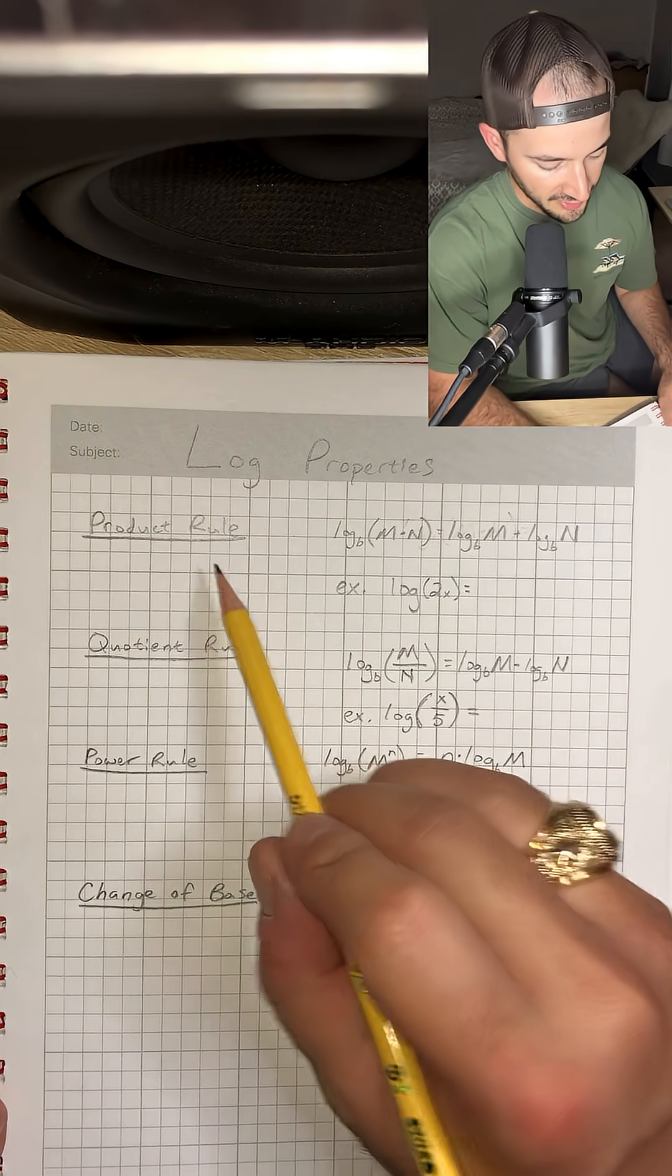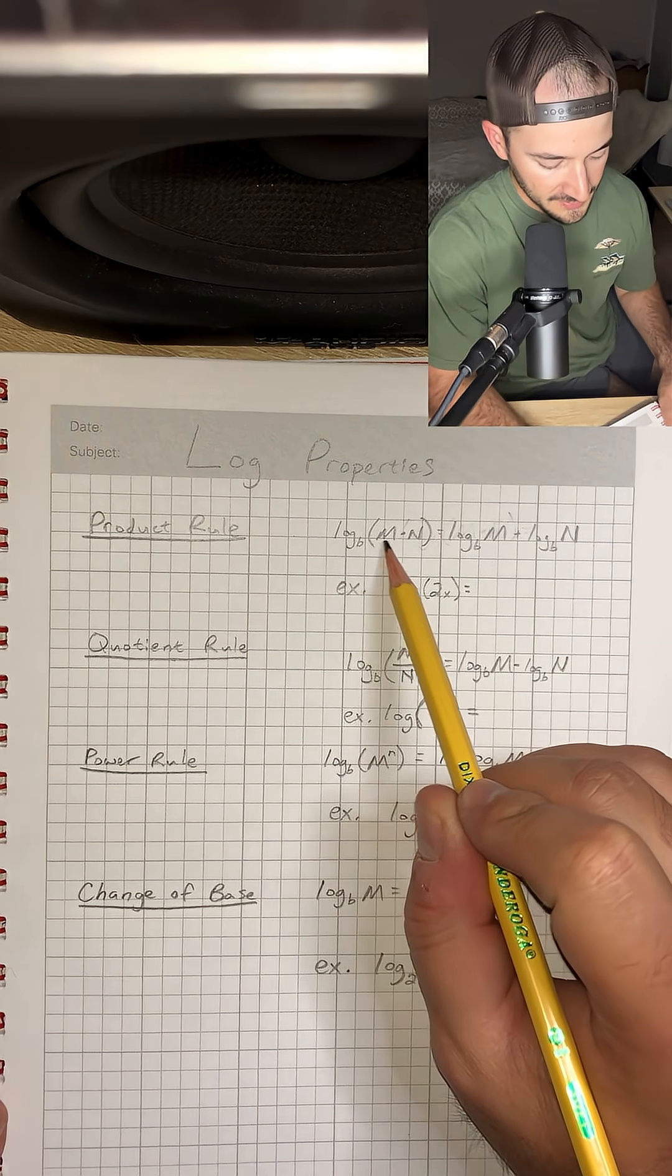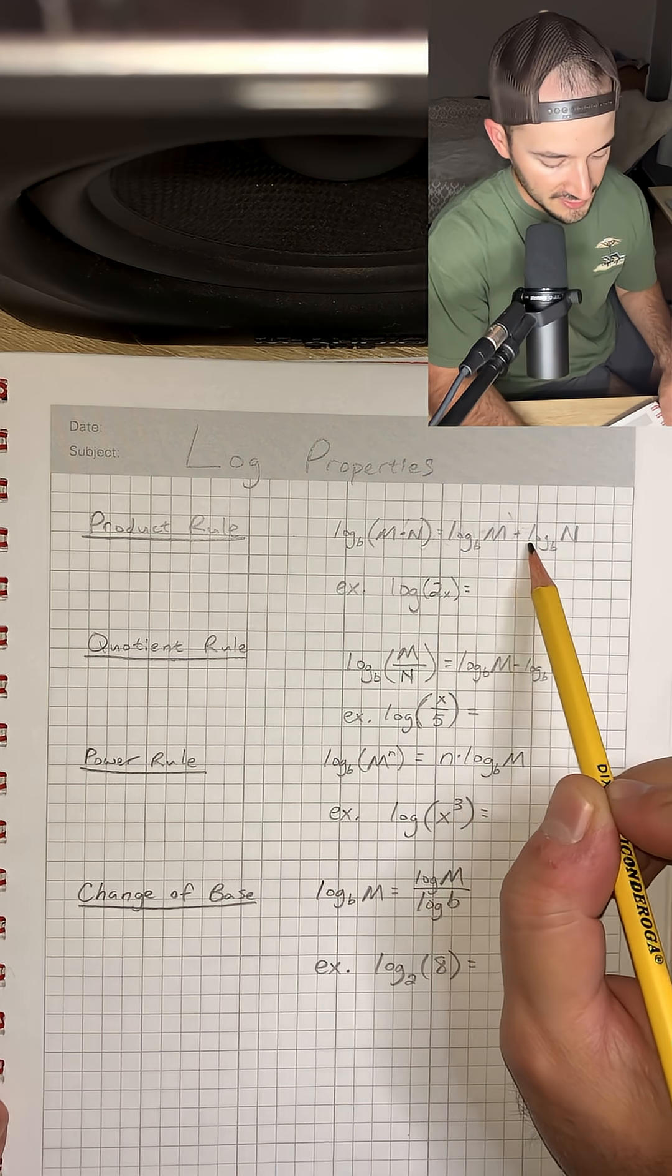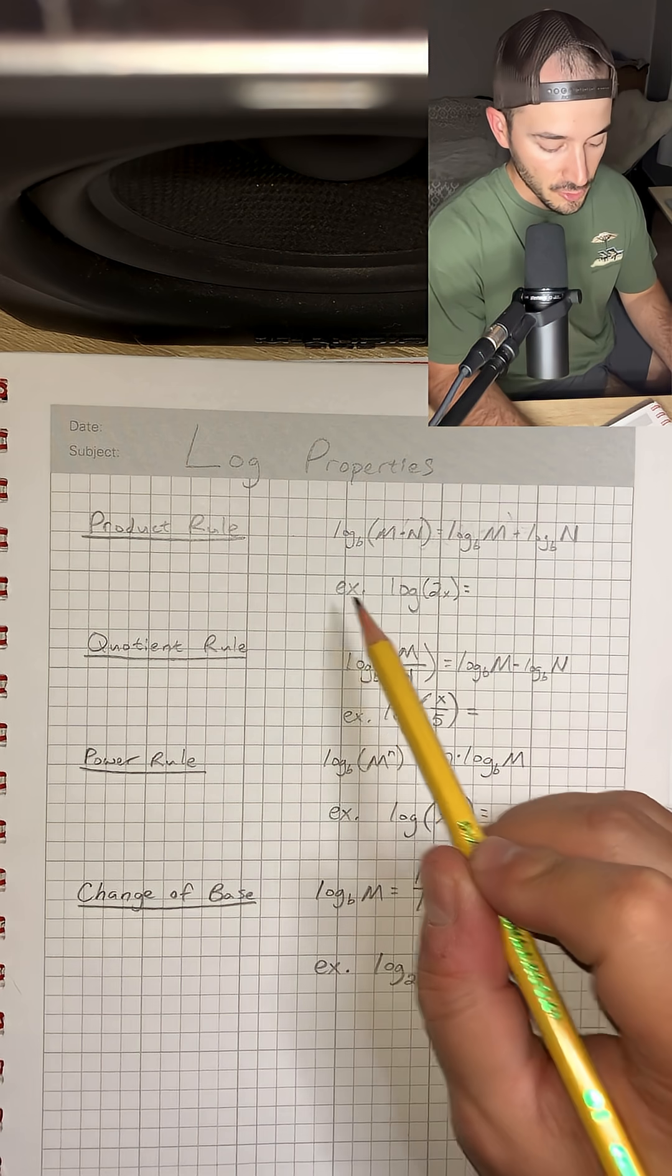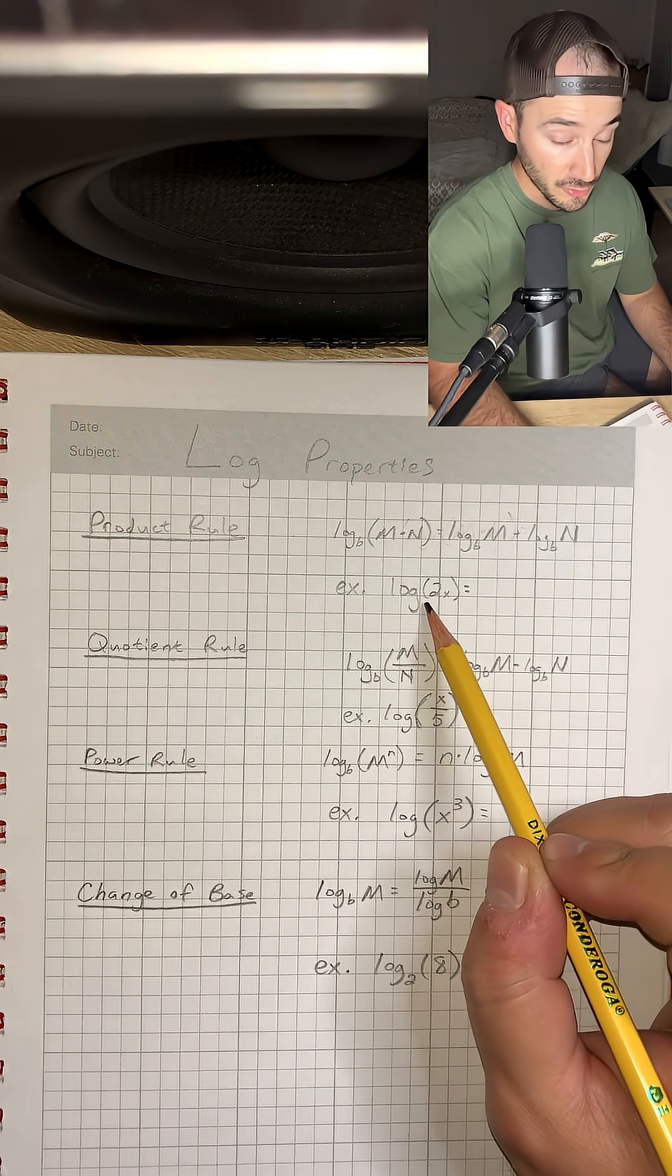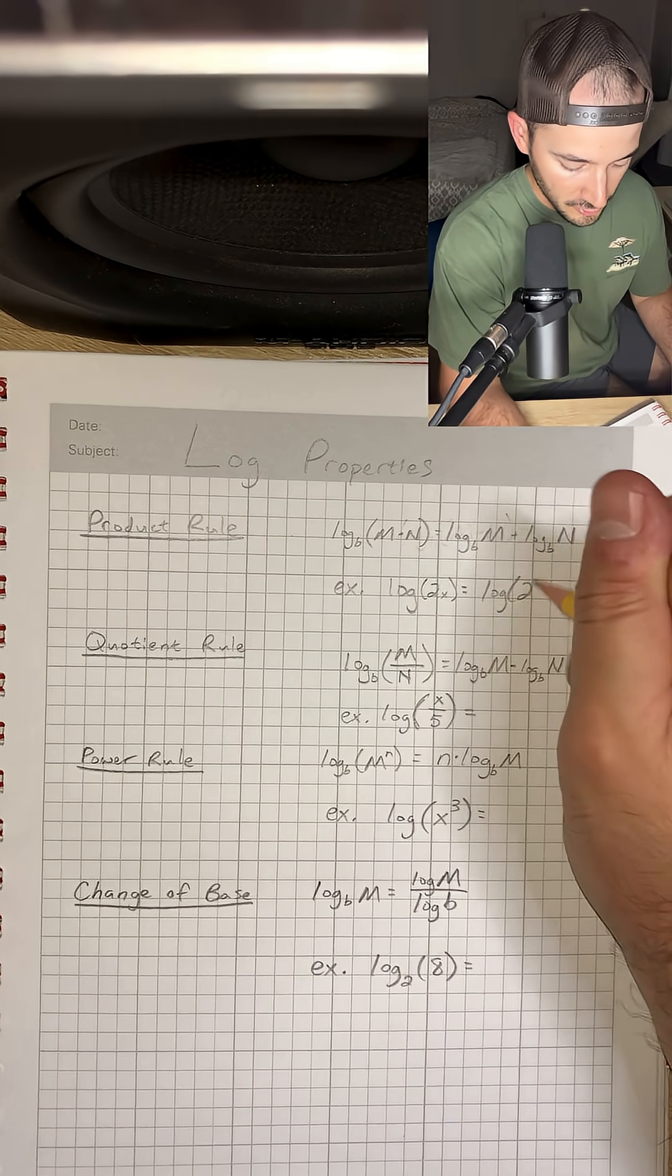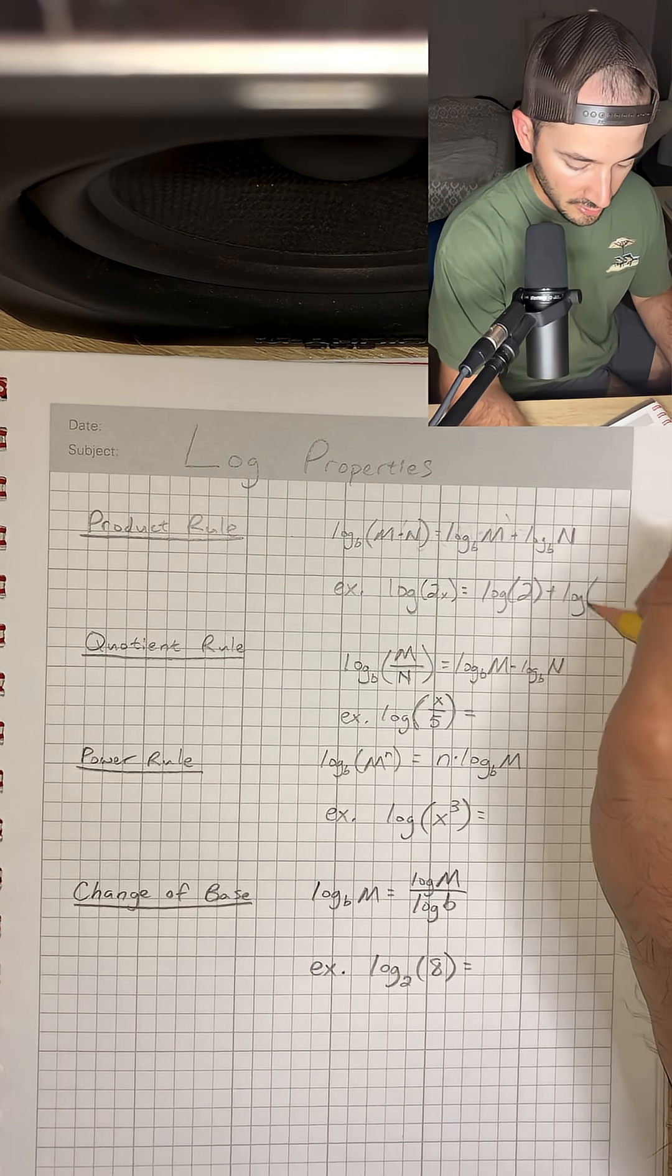First of all, we have the product rule, and that's log base b of m times n is equal to log base b of m plus log base b of n. So in our example, we have log of 2x or 2 times x, and we can rewrite that as log 2 plus log x.